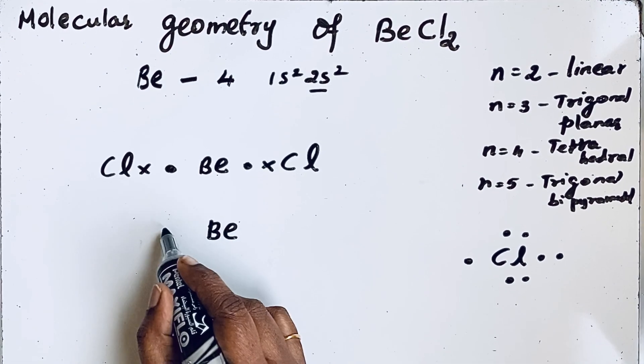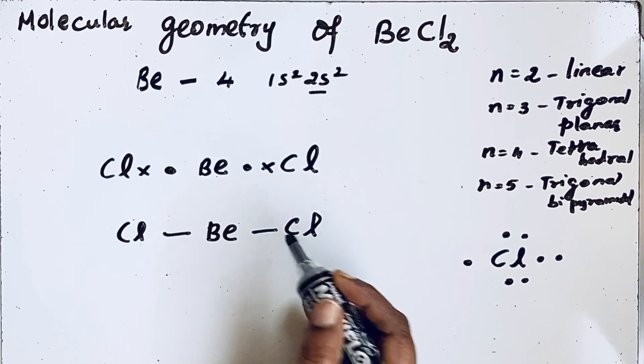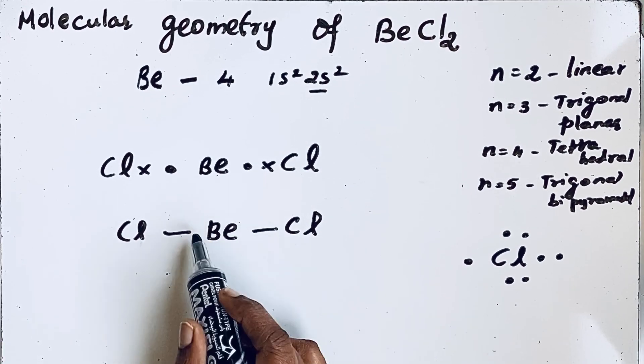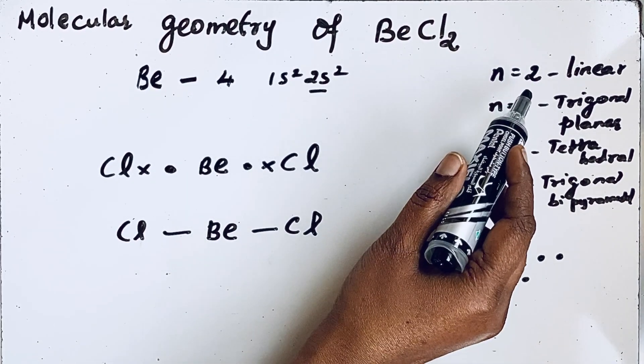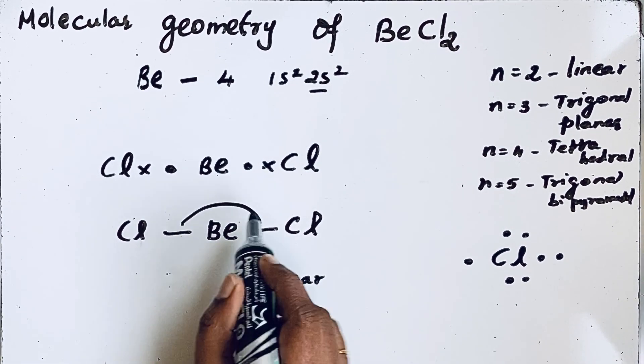We can show it as Cl-Be-Cl. There are 2 bond pairs, so the geometry is linear, and the bond angle is 180 degrees.